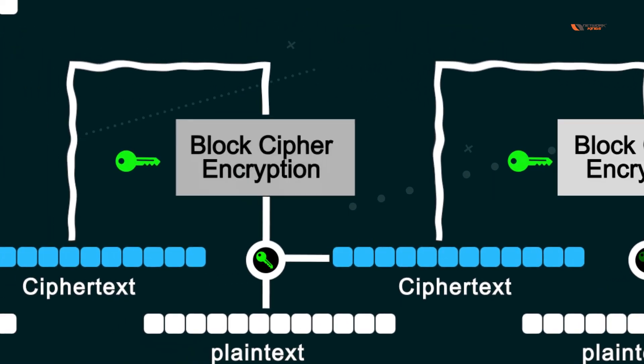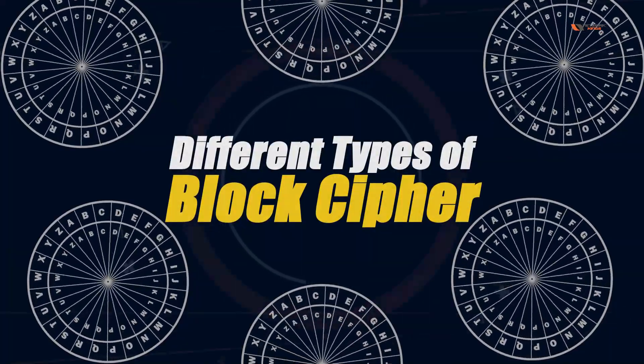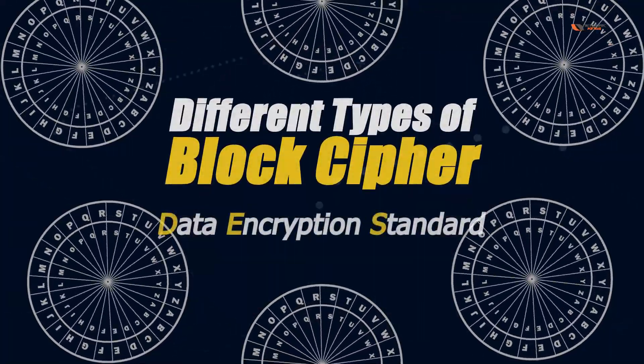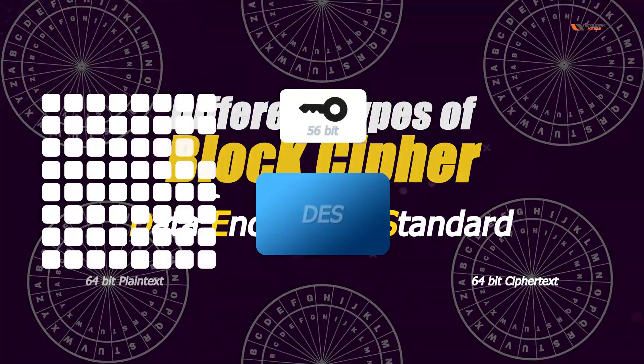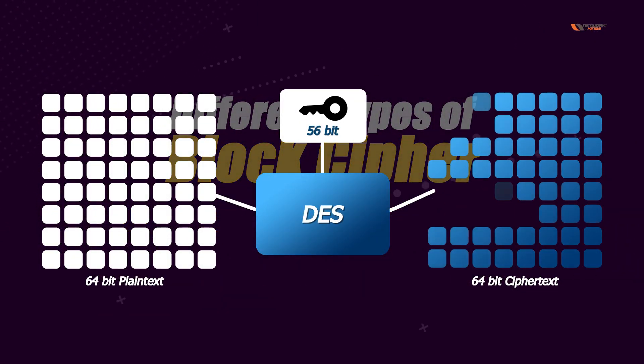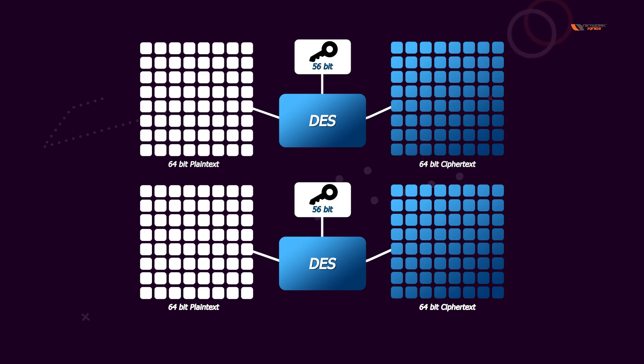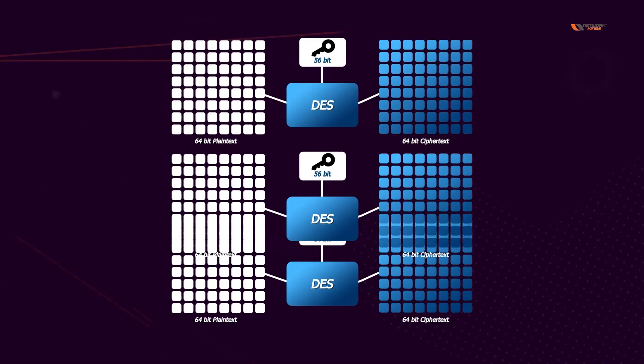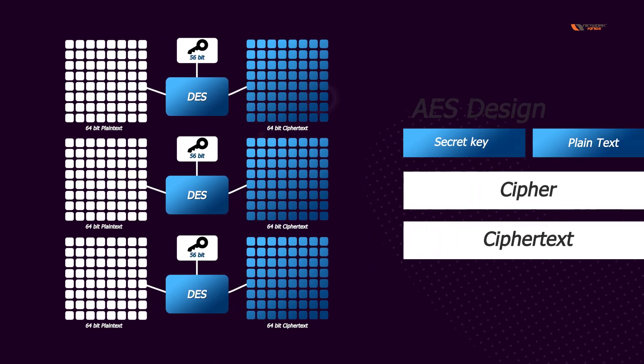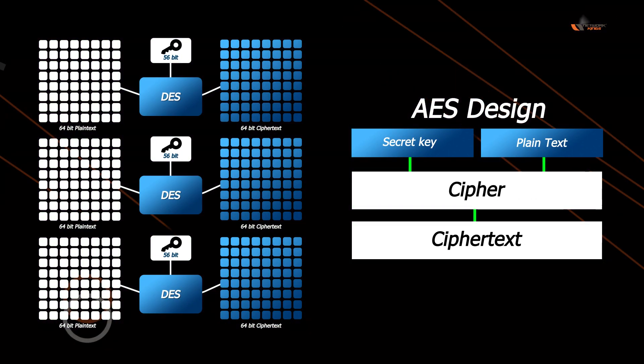Block ciphers have a lot of modes: ECB, CBC, CFB, OCB, and CTR — that's a topic for another video. The different versions include DES, which stands for Data Encryption Standard. Because DES was using a small 56-bit key, new algorithms were needed. After DES, Triple DES was introduced, and then AES was introduced — again, topics for another video.